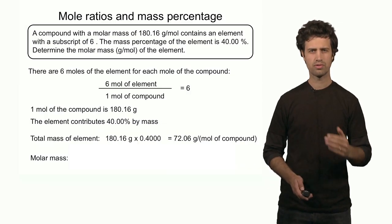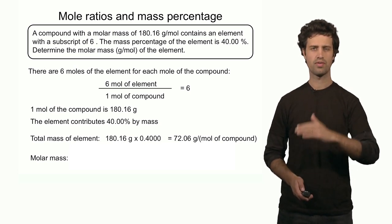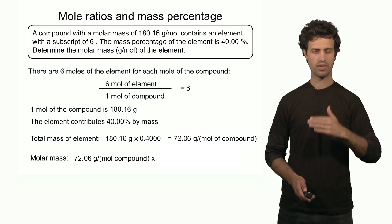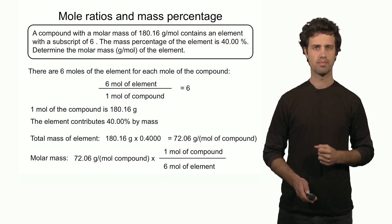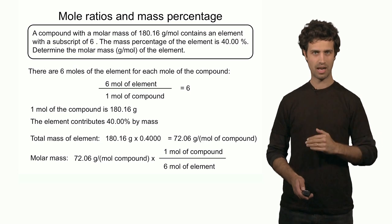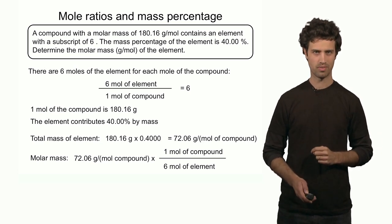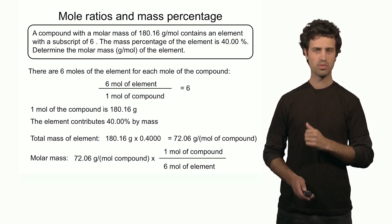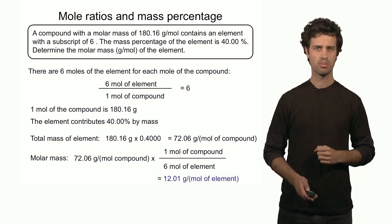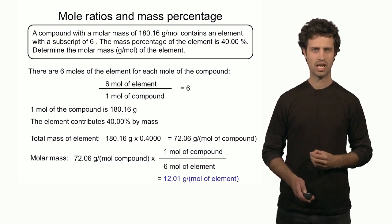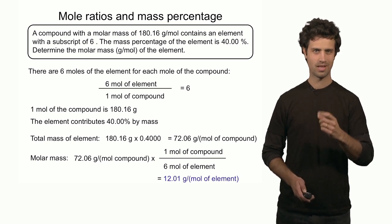The last step is to convert the unit of grams per mole of the compound into grams per mole of the element. So I have to convert 72.06 grams per mole of the compound into grams per mole of the element. I can do that with the mole ratio. The unit here is 1 over mole of the compound, and it has to be converted into 1 over mole of the element, so I take the inverse of the mole ratio as my conversion factor. Note that mole of the compound is on top and mole of the element is at the bottom. Completing this multiplication, I convert the unit into grams per mole of the element. The answer is 12.01 grams per mole. Do you know which element has this molar mass? That's right — it's carbon.